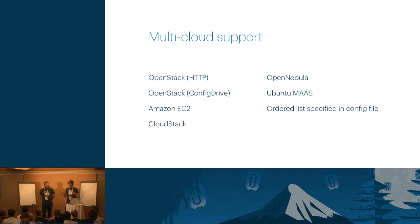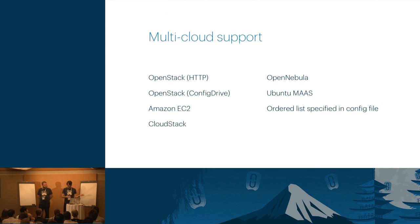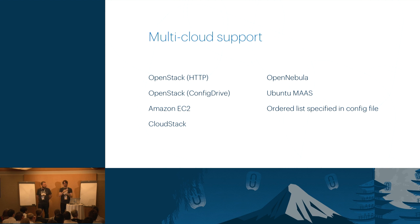We don't support only OpenStack. We support OpenStack HTTP, ConfigDrive, and recently we added ConfigDrive support for Ironic — meaning you can do a bare-metal deployment and have ConfigDrive deployed as a partition inside your target disk. We also support Amazon EC2, CloudStack, OpenNebula, Ubuntu MAAS — one of our favorite bare-metal deployment solutions — and more. You can specify multiple of them and CloudBase-Init will simply try one after the other until it finds the right one, so you can have an image that will work on every possible type of cloud.